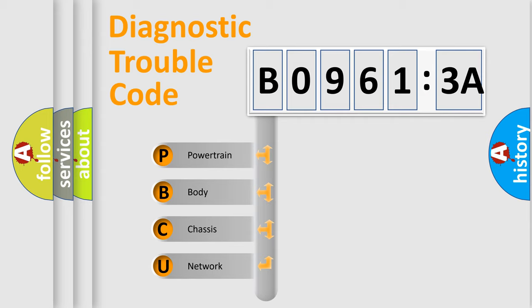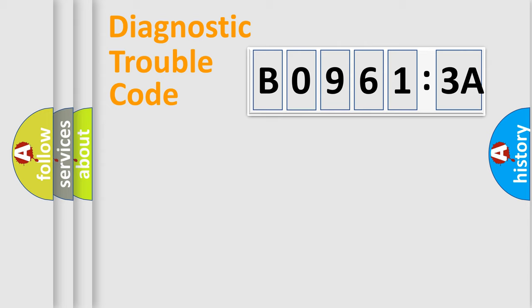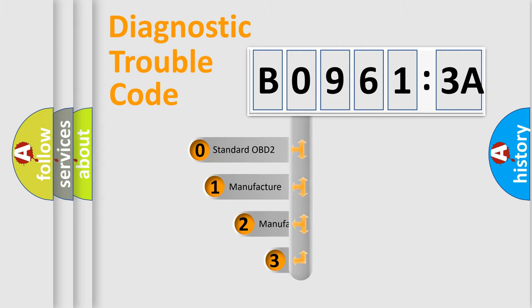We divide the electric system of automobile into the four basic units: Powertrain, body, chassis, network. This distribution is defined in the first character code.